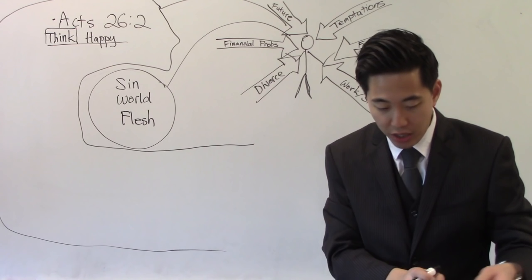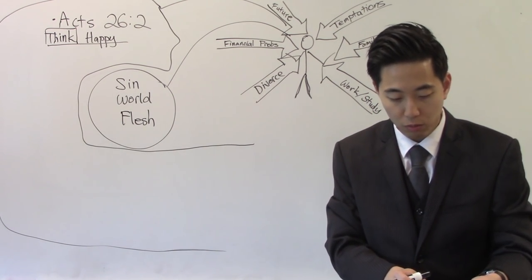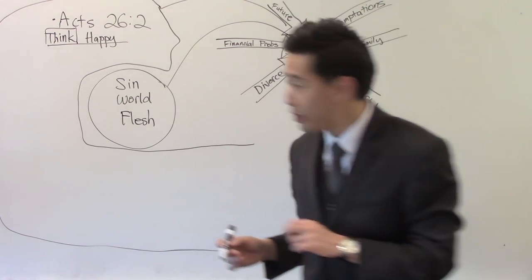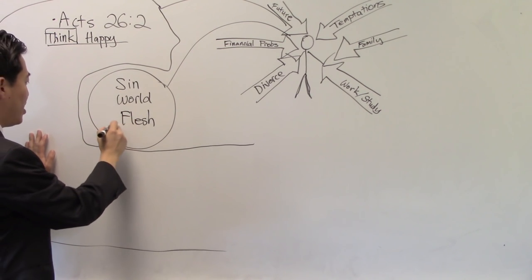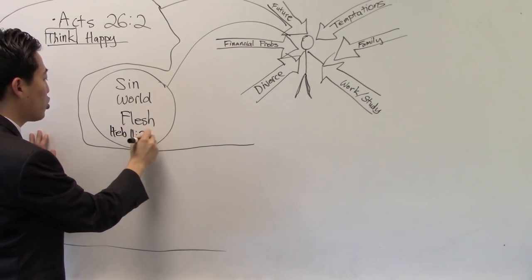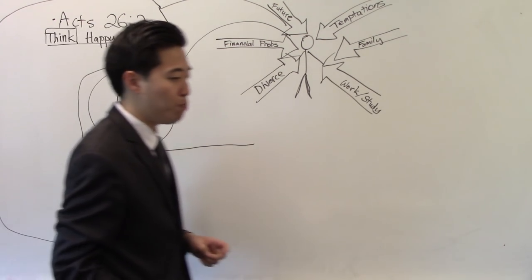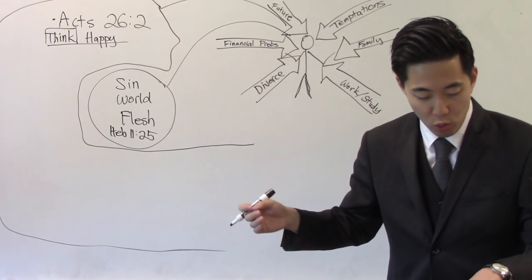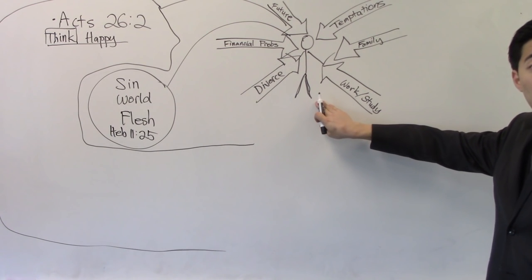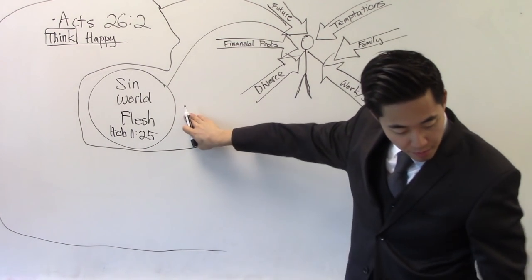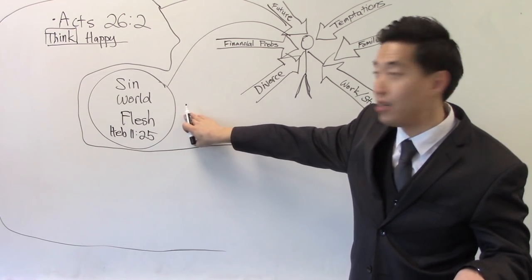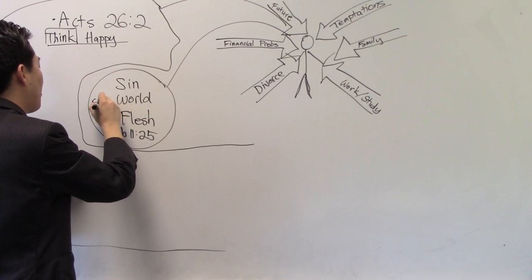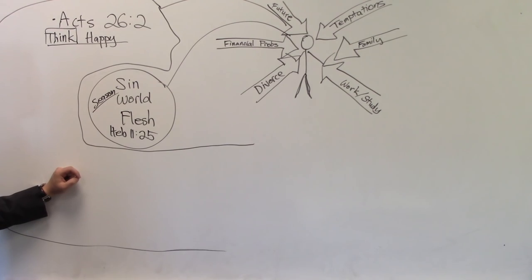Another thing is this, we also got to look at Hebrews chapter 11 verse 25. So why can't this work? I'll tell you why it can't work. You know what Moses chose? Choosing rather, meaning better, he preferred to suffer affliction. He chose to even be in here suffering problems than to enjoy the pleasures of sin. He even preferred this one than this one. Why? Because this one is for a season, it's temporary.